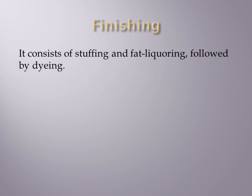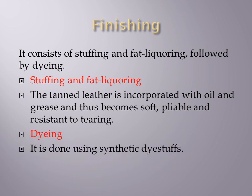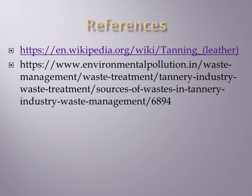After the tanning process, finishing is done. In the finishing process, stuffing and fat liquoring and dyeing of leather are carried out. In stuffing and fat liquoring, the tanned leather is incorporated with oil and grease so that the leather becomes soft, pliable, and resistant to tear. Dyeing is done to provide different colors to the leather using synthetic dyes.